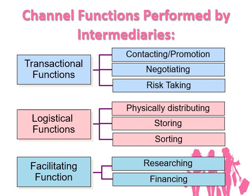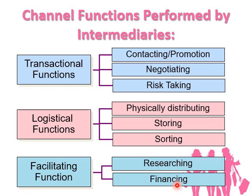Now let's look at the channel functions performed by intermediaries — whether merchant wholesalers, retailers, agents, or brokers. There are three functions: transactional functions, logistical functions, and facilitating functions. Transactional functions include contacting customers and promoting to them, negotiating, and risk-taking. Logistical functions include physically distributing, storing, and sorting the product into categories such as grades A, B, C or by size. Facilitating functions include doing research and financing.